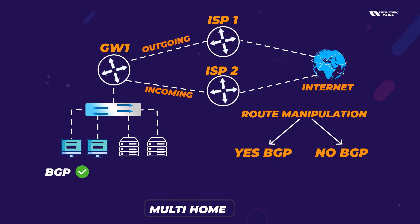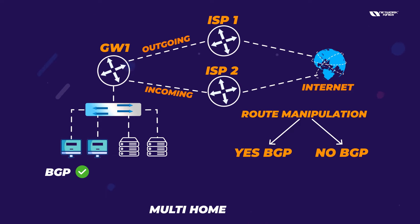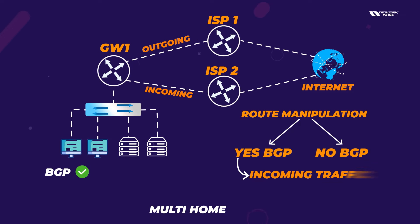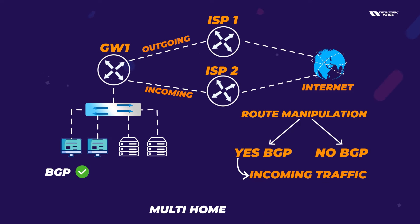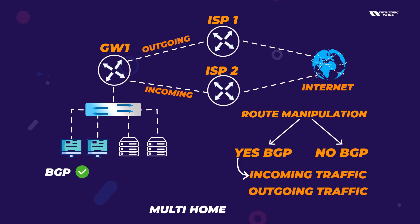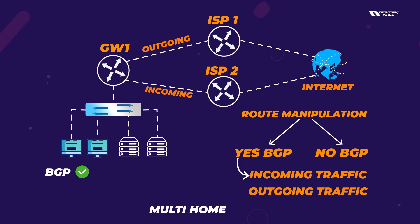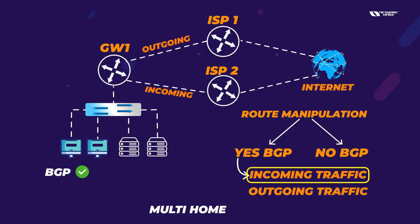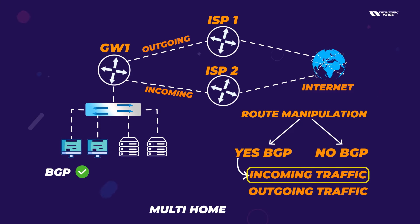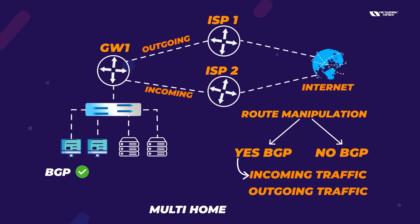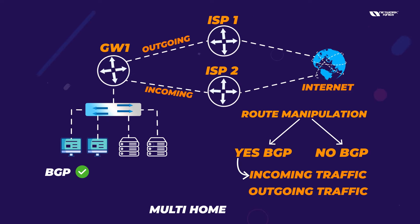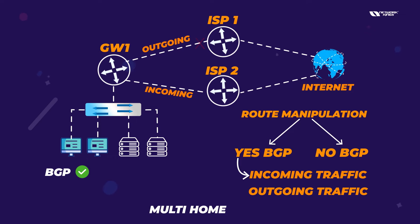BGP is the only protocol that can manipulate incoming traffic. Other protocols like OSPF can only change outgoing traffic behavior, but BGP can change incoming traffic behavior as well. That's the key reason BGP is used — you can control which link your incoming traffic arrives from, whether ISP1 or ISP2.